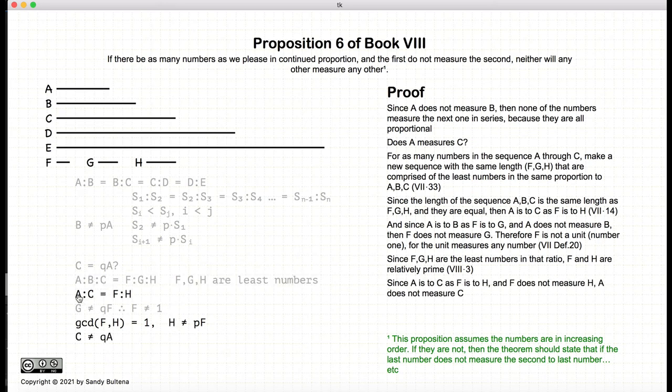And again, because A to C is equal to F to H, if F does not measure H, A does not measure C. So thus we have shown that A does not measure B. If A does not measure B, it also does not measure C.